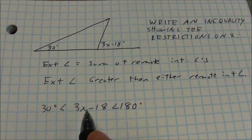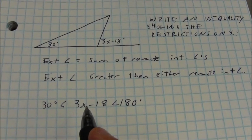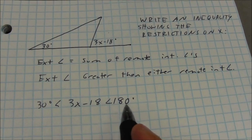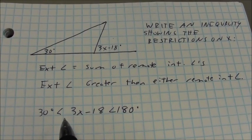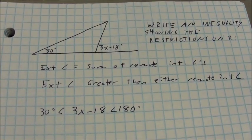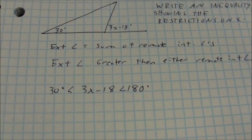Basically, any angle is going to be between 0 and 180. So you need a value that's going to be greater than 0. But first, use your remote interior angle to get that first boundary, and then you can fill in the other one using a little bit of common sense.